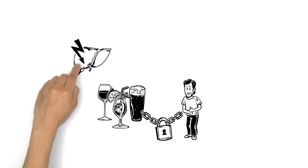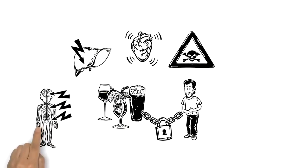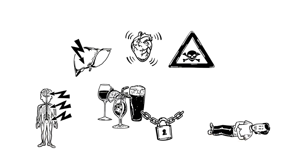Long term problems can include addiction, liver disease, high blood pressure and cancer. Alcohol's effect upon the central nervous system can lead to coma and even death.